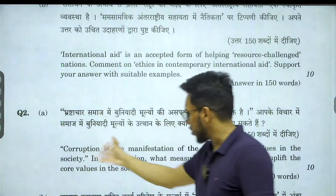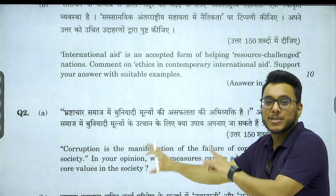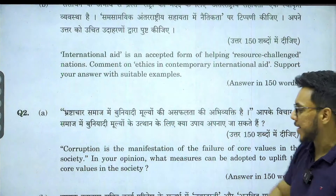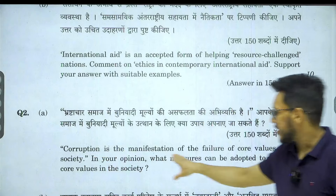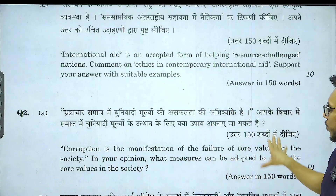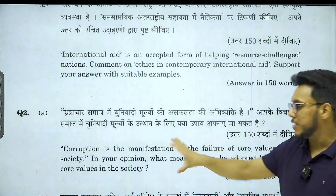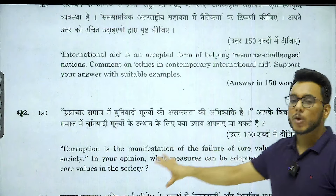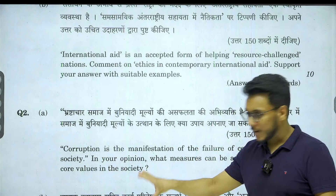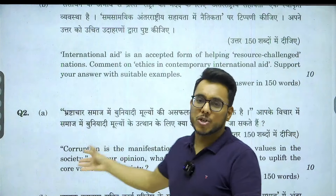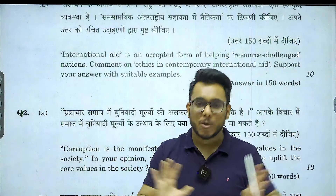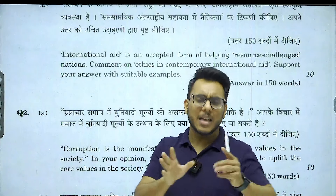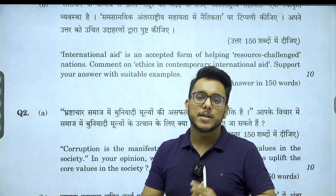Then there was a question on the crisis of value: 'Corruption is the manifestation of the failure of core values in society. In your opinion, what measures can be adopted to uplift the core values?' Again, a very direct question from the topic of values, but giving examples is something that is a little tricky. So questions are moving — some years generic, some years very specific domain-based.